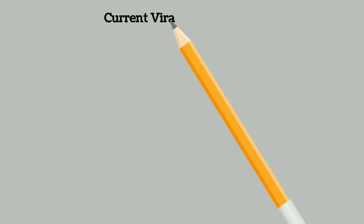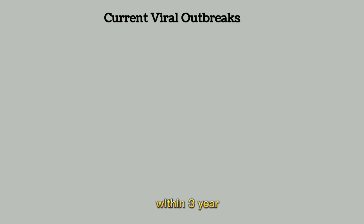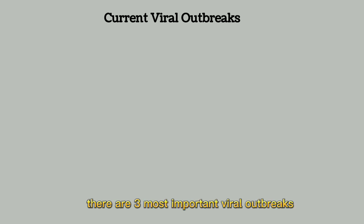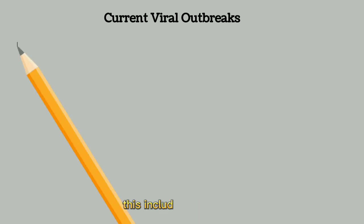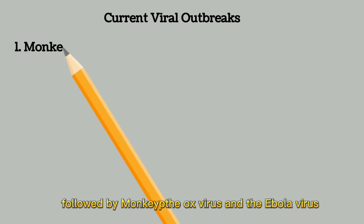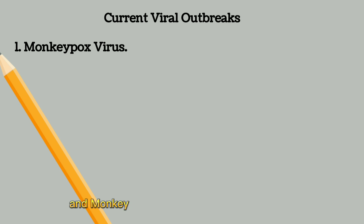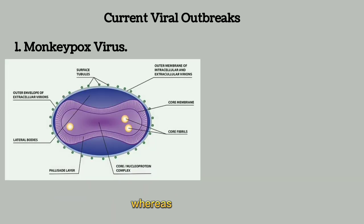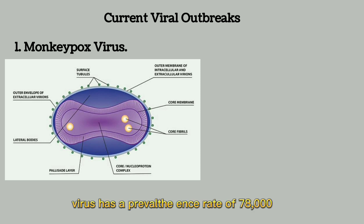Within three years, from 2019 to date, there are three most important viral outbreaks. These include the coronavirus, which is gradually changing due to mutation, followed by monkeypox virus and the Ebola virus. Coronavirus and monkeypox virus have a worldwide prevalence, whereas monkeypox virus has a prevalence rate of 78,000 people.